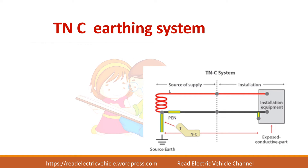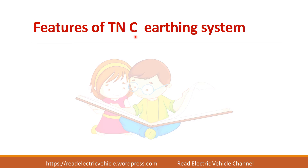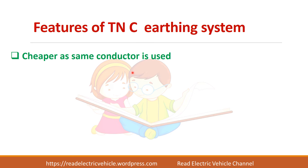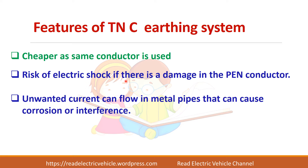The next type is the TNC earthing system. C stands for combined, so the neutral and protective functions are combined in a single conductor — called the protective earth neutral (PEN). The source side is T, directly connected; the second letter indicates neutral; and the third letter C means two conductors are combined into a single one. TNC is cheaper than TNS because only a single conductor is used. However, if this conductor breaks or is damaged, you will get a shock, so this type of system is normally not preferred.